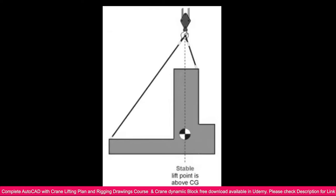Now you can see the lifting point and CG point coming into line. When I moved the lifting point to the CG, the object can be lifted properly. So when you make the load block, you must specify the CG point — that is very important.